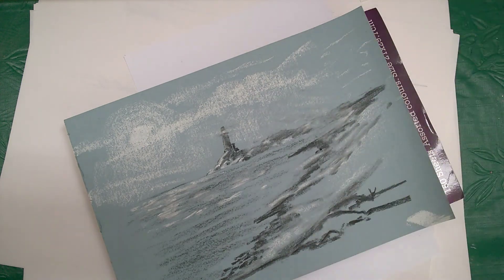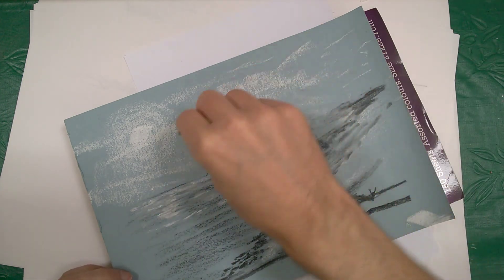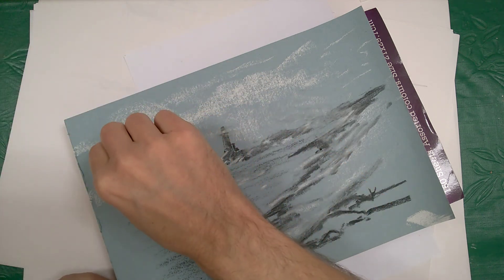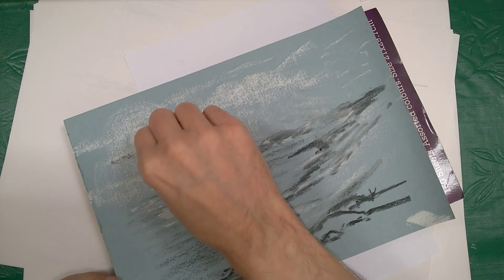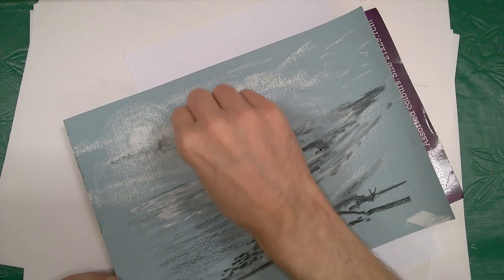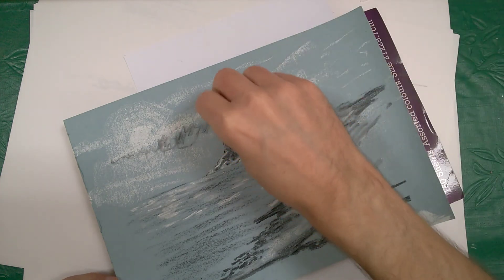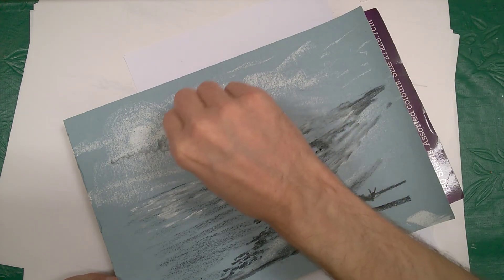And then back to my charcoal. And if the light is on top of the clouds, it's going to be slightly darker on the underside. So follow your cloud patterns. I don't like that piece of charcoal, let's swap it over. That's better.